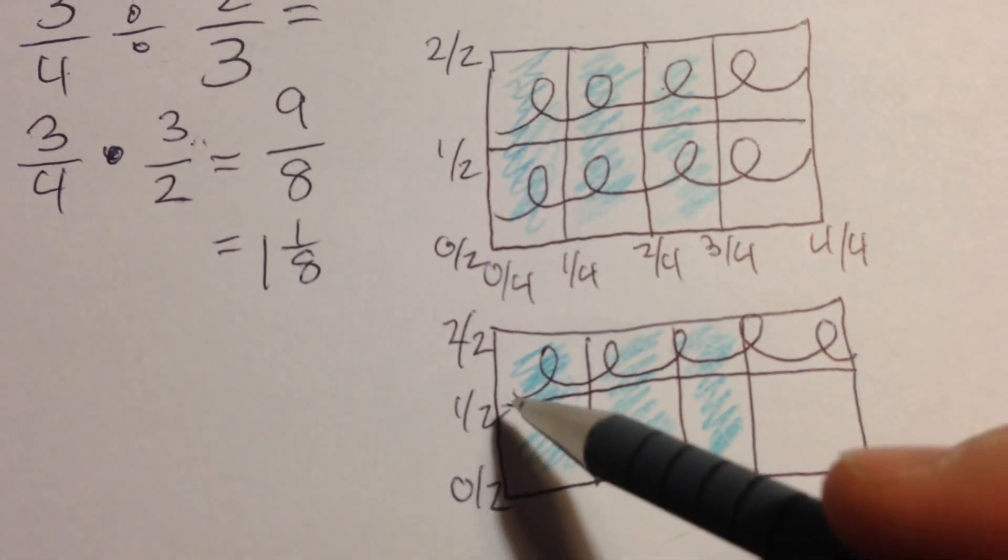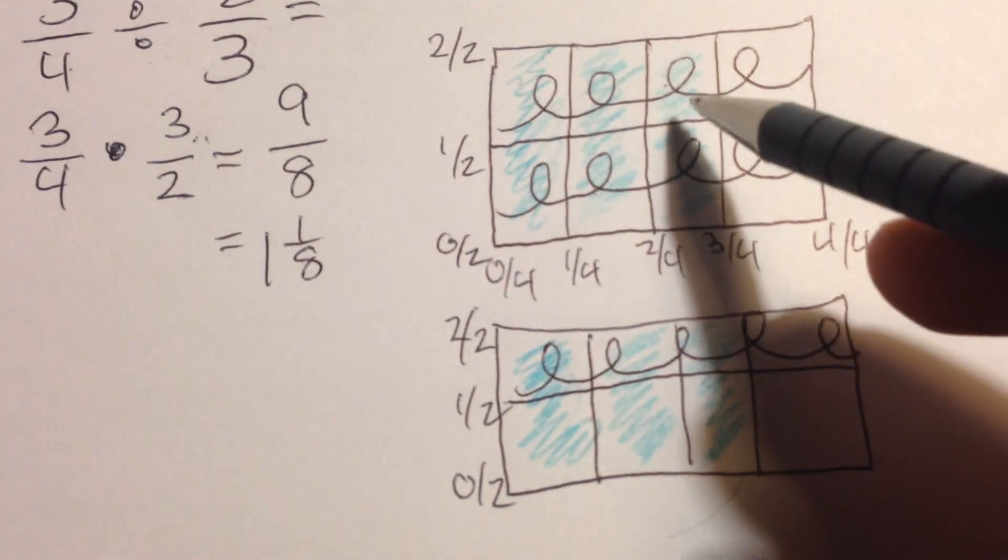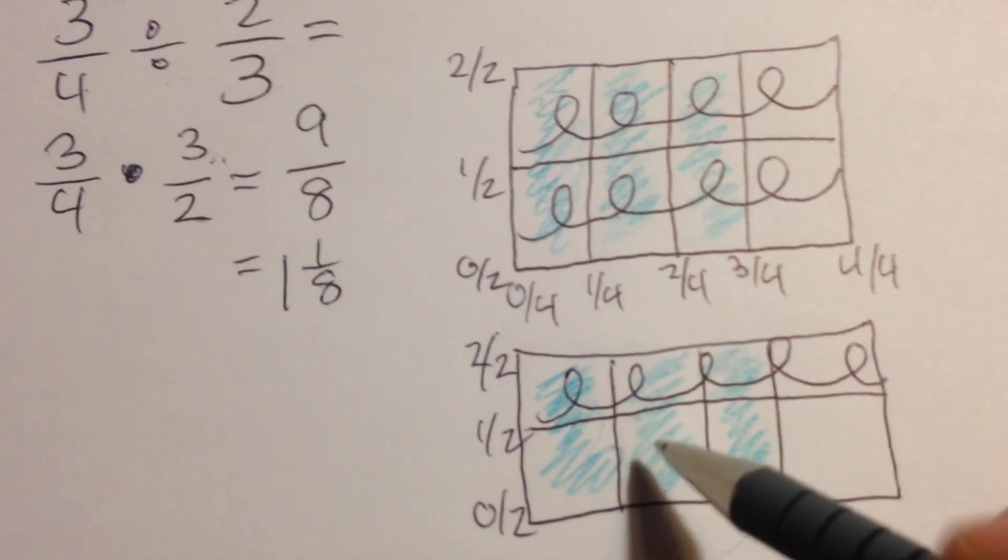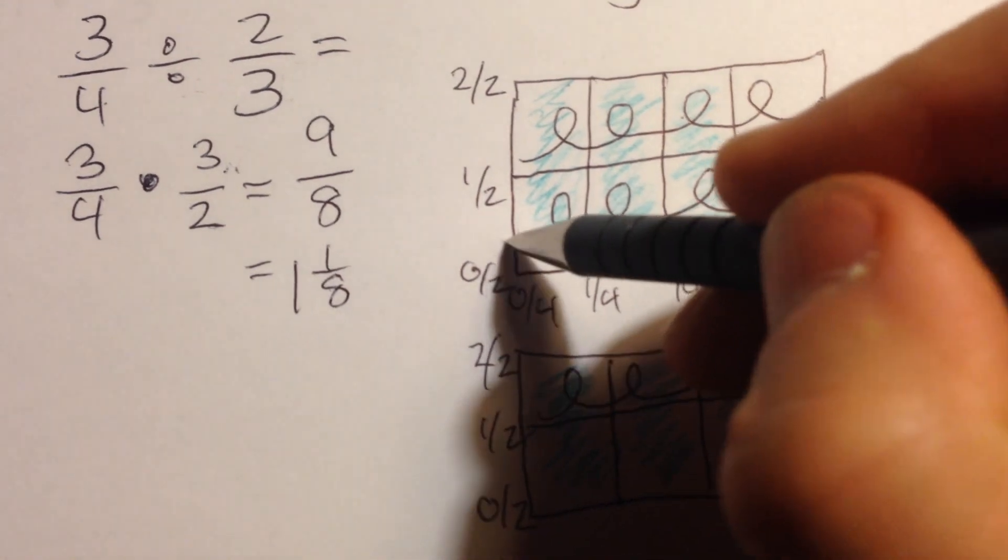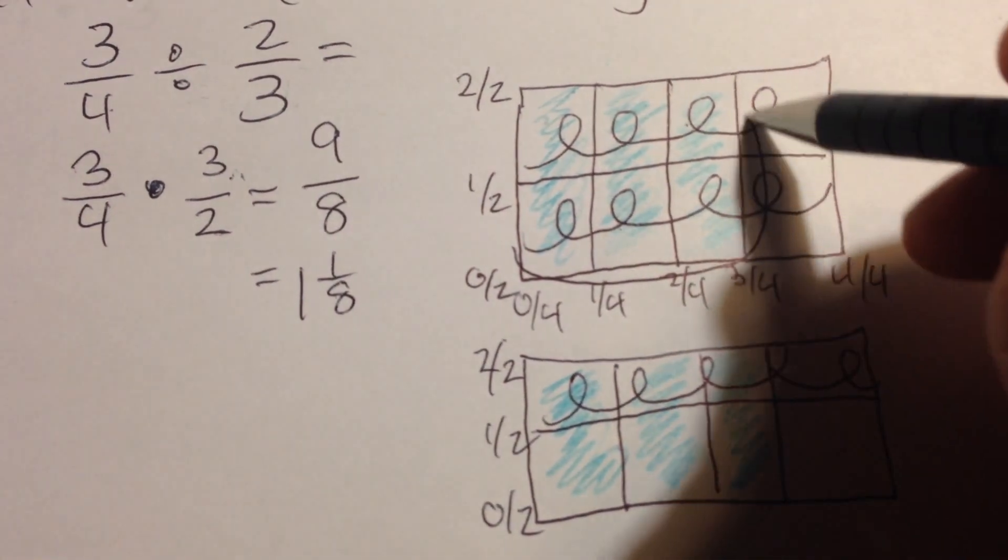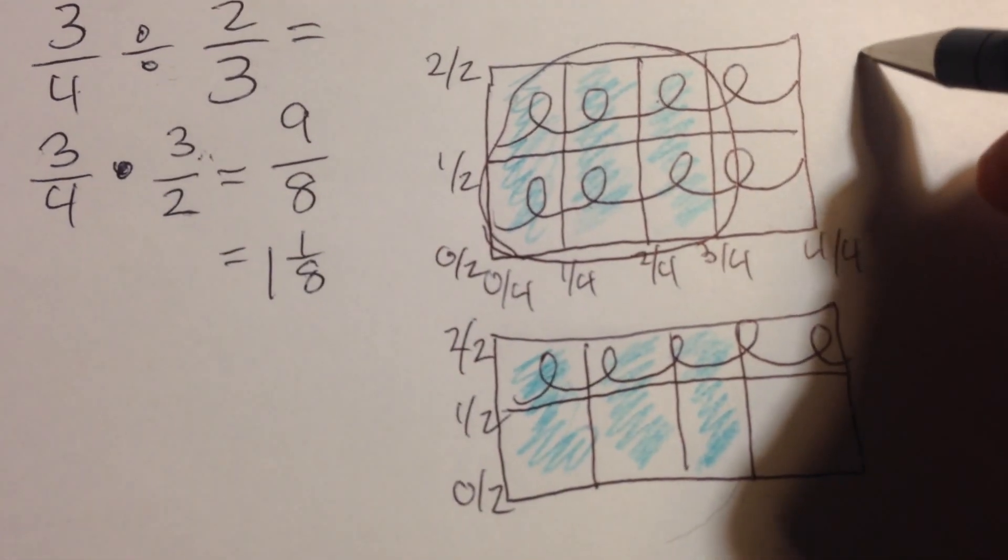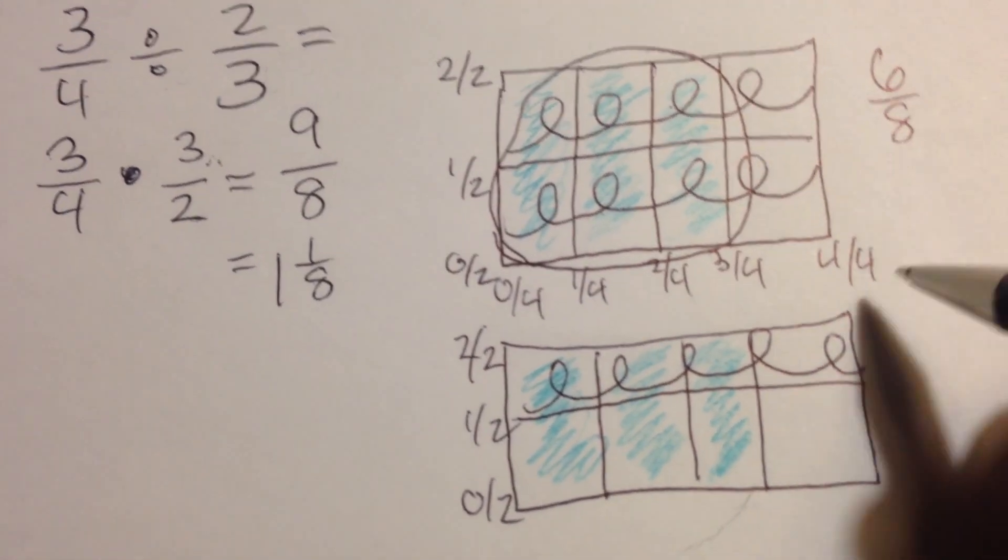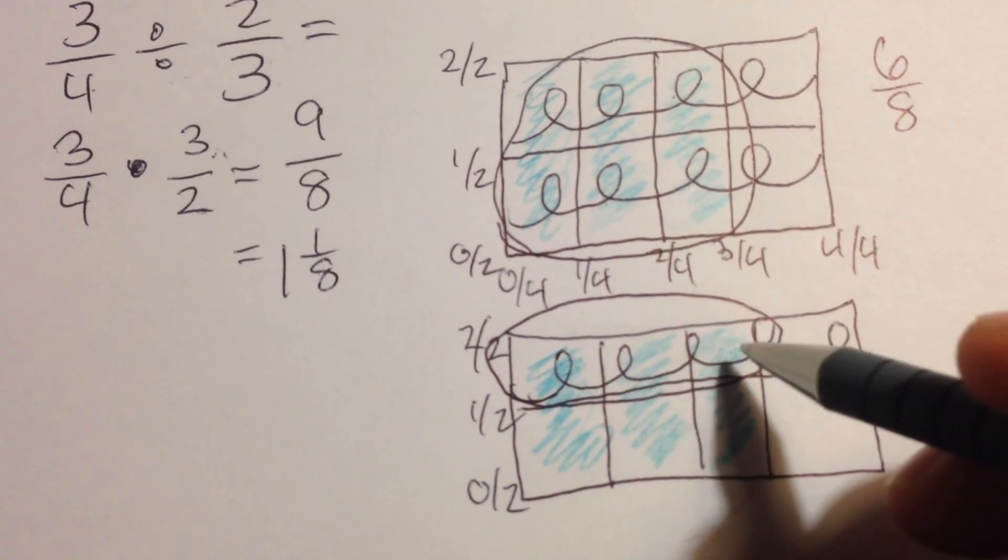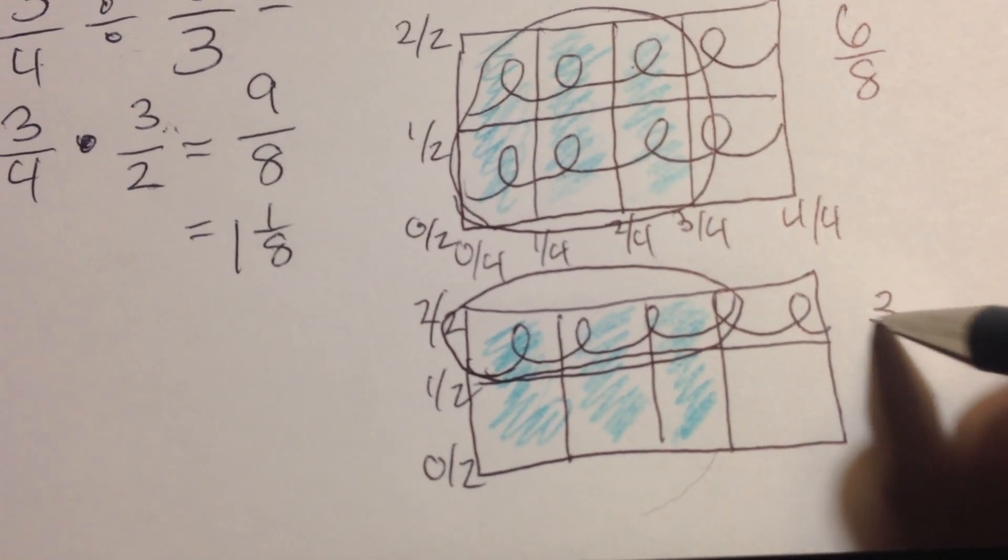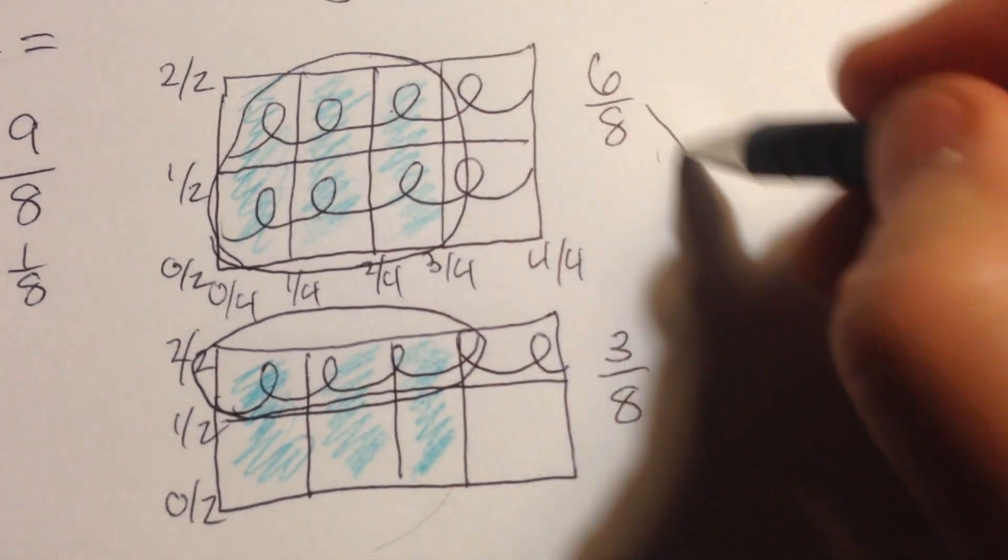If you think about it, I have 1 half, 2, 3, and 4 halves, but I have 3 of them shaded in. Remember, my answer is identified by the areas that are double shaded. If I look at this up here, the part that's double shaded is actually 6 eighths. And the part that's double shaded here is 1, 2, 3 out of 8.